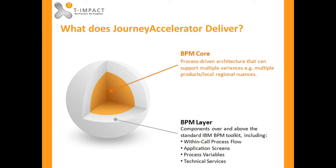But what does it actually deliver? We've used a process-driven architecture that can support multiple variances — for example, multiple products, local or regional nuances. This means that you can build once and deploy many times, reducing cost, rework, and waste.